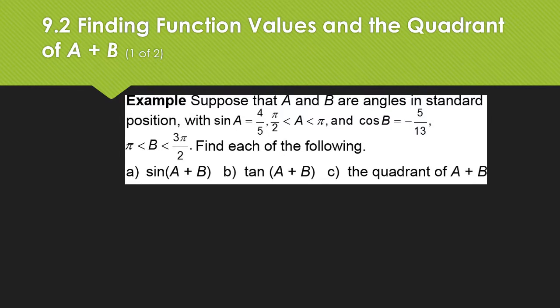Here's another example. It's giving us A and B in standard position. They're giving us the sine of A. They're telling us this is in quadrant 2 because it's between pi over 2 and pi. They're giving us the cosine of B and telling us that it is in quadrant 3. That's going to affect the signs as we go through this. You're going to find the sine of A plus B, the tangent of A plus B, and then the quadrant of A plus B. Pause the recording, give this a try and resume to check your answer.